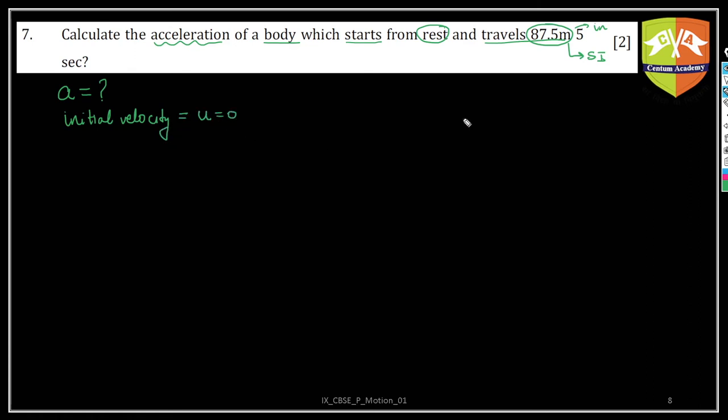It's always good to draw a representative diagram. So let us draw a diagram. Here is the straight line in which the body is moving. Let's say it starts from A, goes to B. It travels 87.5 meters in five seconds. We start from t equals zero and t equals five is the window I'm talking about here.